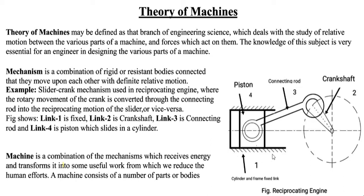You see link one. Link one is fixed in rest position. It's not moving anywhere else. Link two is the crankshaft. Link three is the connecting rod. Link four is the piston. This is the piston which slides in a cylinder.